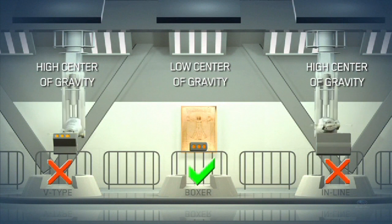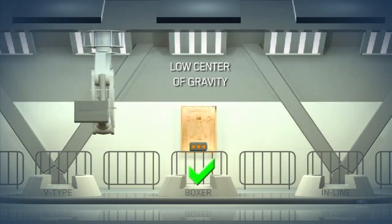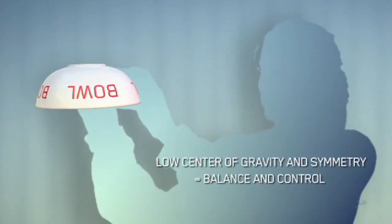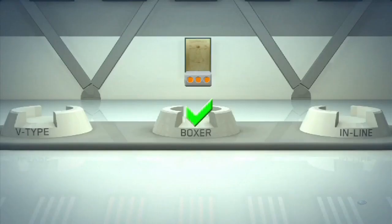Centre of gravity is a concept that is pivotal to balance. A simple demonstration involves an everyday item like a bowl. When upright, the bowl is difficult to balance on a fingertip. Its centre of gravity is too high. But by simply turning the bowl upside down and lowering the centre of gravity, balance comes easy.